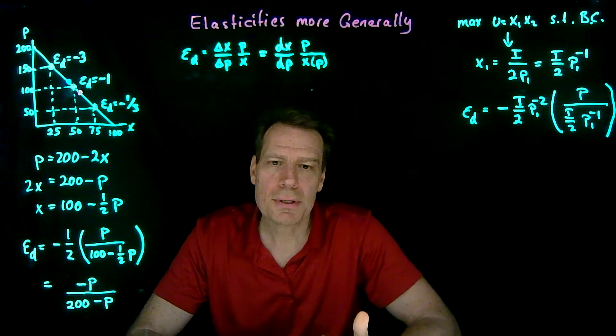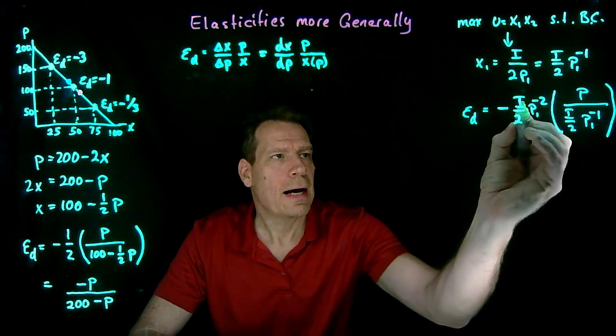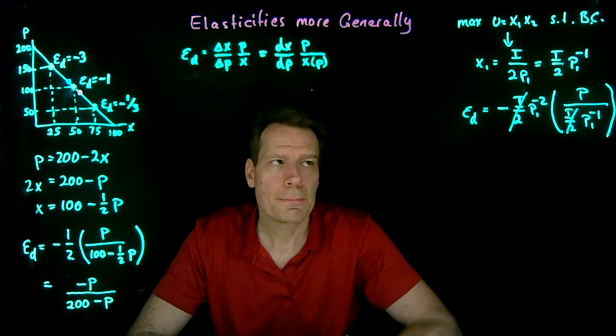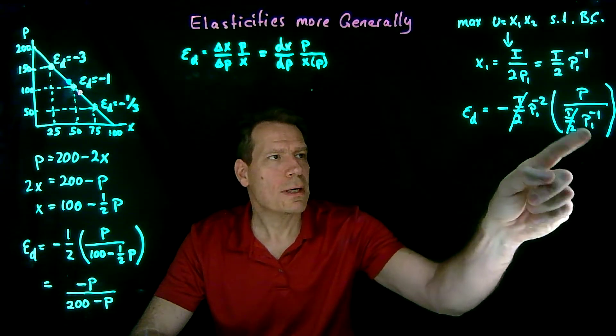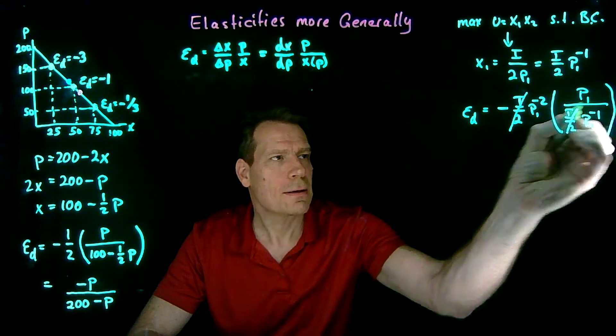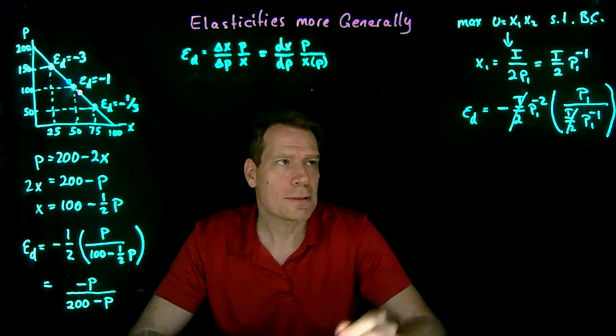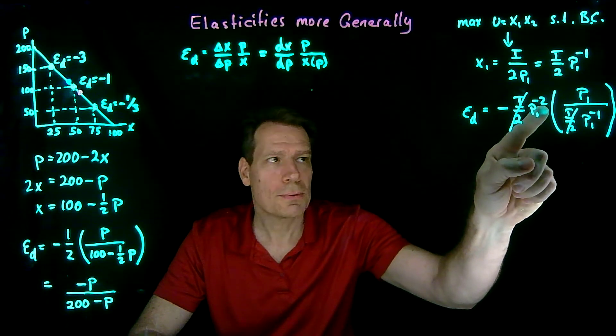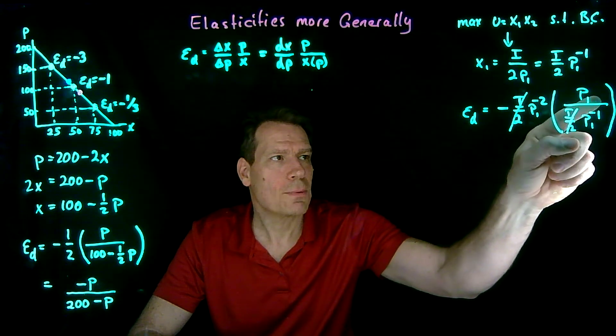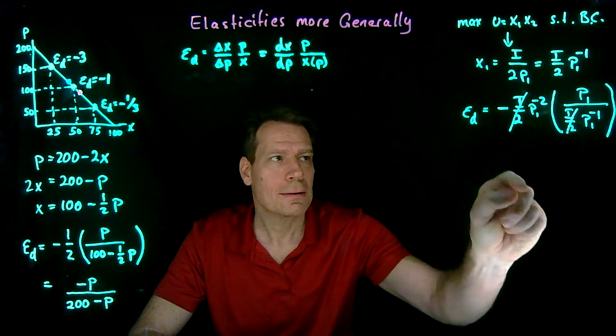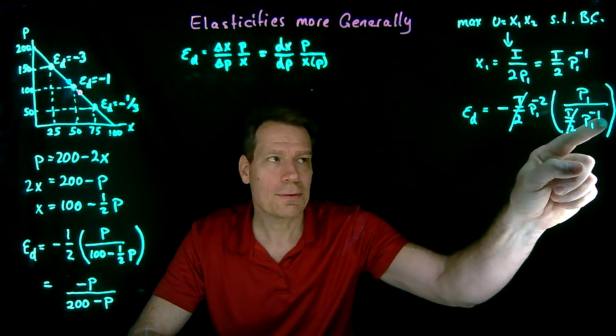That looks messy, but there are a bunch of things we can cancel in here. i over 2 appears in the numerator and denominator. And then we have a bunch of p1s. That's a p1 as well. With exponents, so we have to add and subtract exponents. We start with this minus 2. Multiply that by p1 to the 1. So we add the 1. That becomes a p to the minus 1. And then we have a minus 1 down here. When we subtract that, it becomes a positive 1.